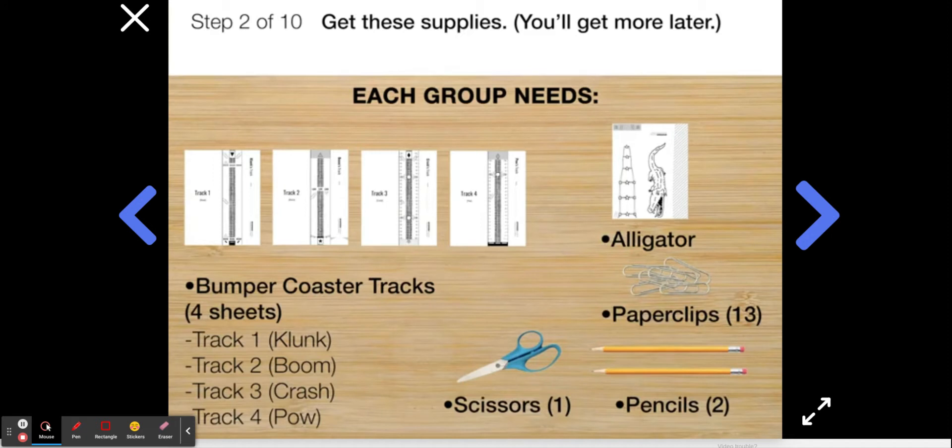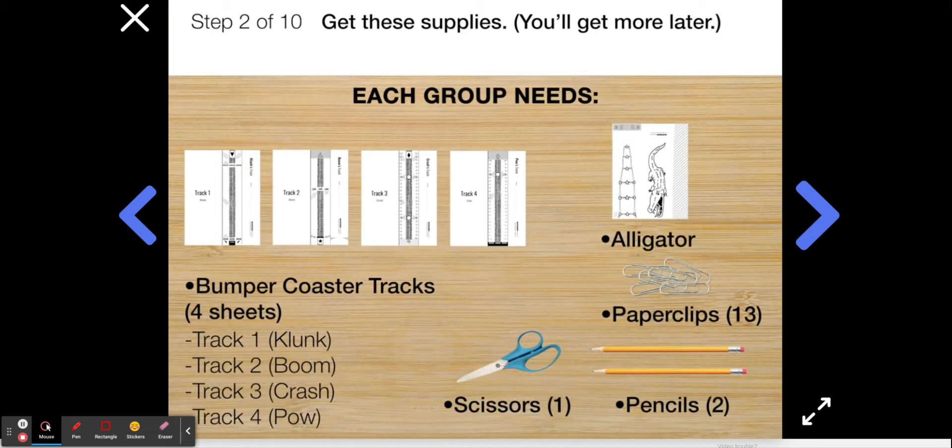When you're getting these supplies, clunk, you're going to be making track one. Boom, you'll make track two. Crash, you'll make track three. And pow, you'll make track four. But just get these supplies for now. Don't start building yet. We'll show you how to get started in the next step.